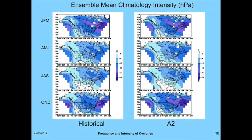Here's the ensemble mean intensity, removing a regressed seasonal climatology. You can see the Icelandic low well-represented in the wintertime. Historical on the left, A2 on the right, by season. There's a nice seasonal progression from an intense Icelandic low in winter, weakening into summer, then intensifying back in fall. There's also a hint of North Pacific activity off the west coast, but because the model domain doesn't extend past about 150 degrees west, I only catch an edge of the North Pacific storm track.